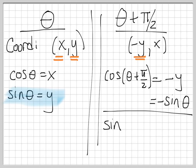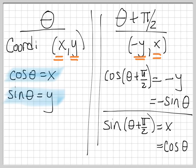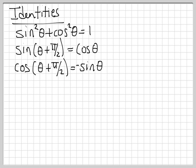Likewise, sine of (theta + π/2) is the second coordinate of (-y, x), which is x. But looking over on the left, x is cosine of theta. So when you take sine of (angle + π/2), it's just cosine of the old angle. So we have two new identities: sine of (theta + π/2) equals cosine theta, and cosine of (theta + π/2) equals negative sine theta. We're adding new rules so that whenever you have something you don't like, you can replace it with something you do like — and it's going to help you combine things in the future.